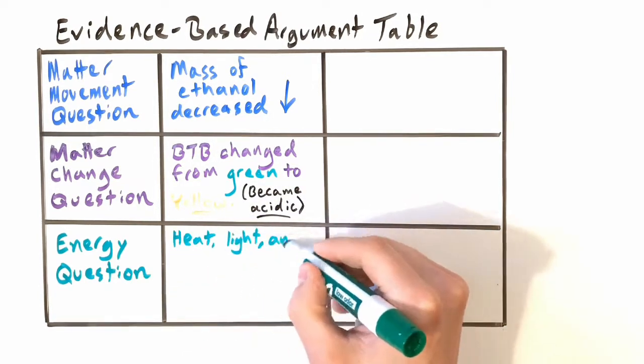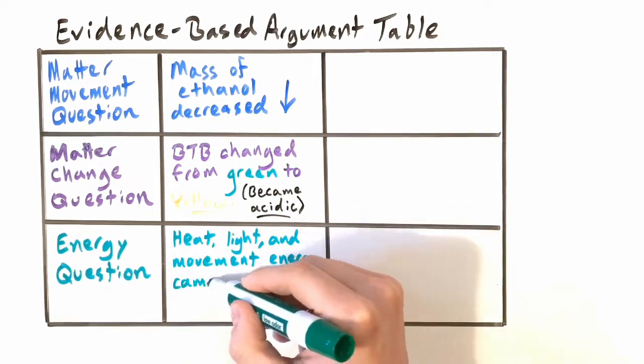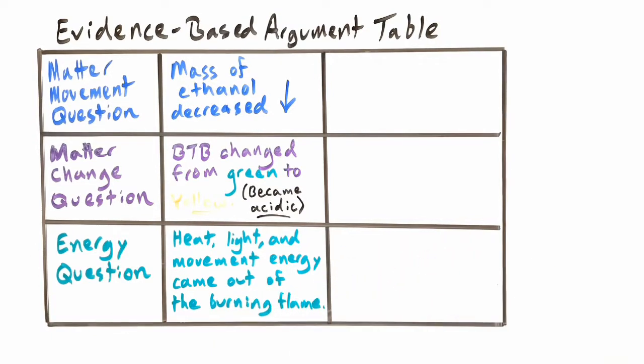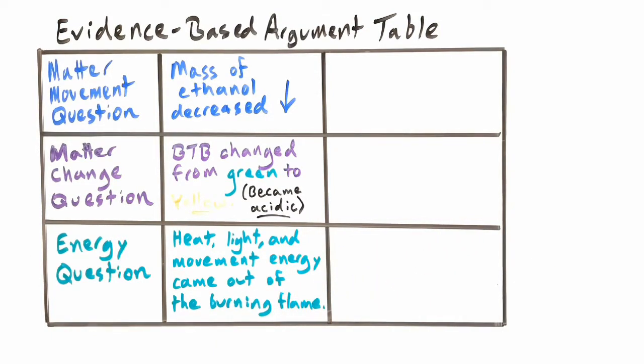As far as the energy question, we found that heat, light, and movement energy came out of the flame. So what conclusions can we draw from all these observations? Take a moment to pause the video and come up with one conclusion for each observation.